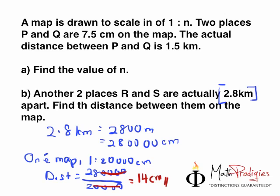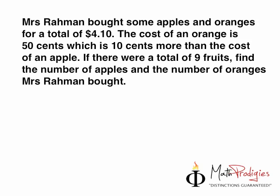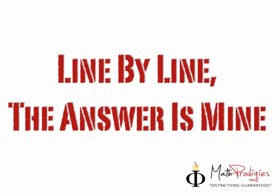All you have to do is read the quote of the week: 'Line by line the answer is mine, step by step, line by line, the answer is yours.' It means you have to read the question line by line. For example, read 'Mr. Rahman bought some apples and oranges for a total of $4.10' — line by line, you understand what the information is giving you. When you do your working, make sure you do it step by step. Don't ever skip steps, because when you skip steps there's a bigger chance you'll make a mistake. Do it line by line and the answer will be yours. This is Cody Saifu signing off — you are a math prodigy, good job!